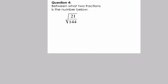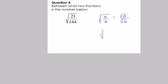Between what two fractions is the number below? The square root of a fraction is nothing to be afraid of — it looks intimidating, but we can deal with it quite easily. When we take the square root of a fraction a over b, one way is to take the square root of the numerator and the square root of the denominator separately. For example, the square root of 4 over 9 is the square root of 4 over the square root of 9, which gives 2 thirds.